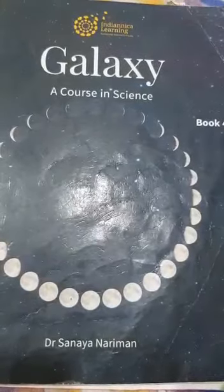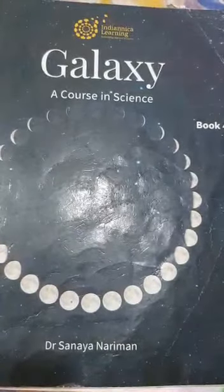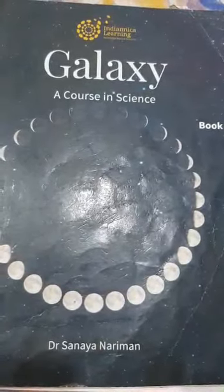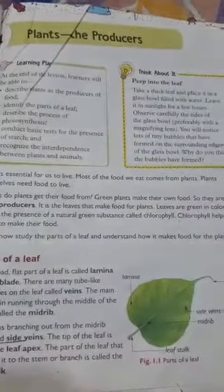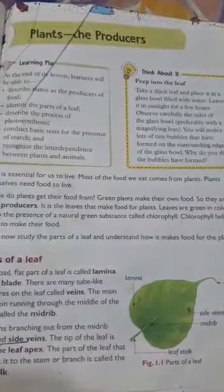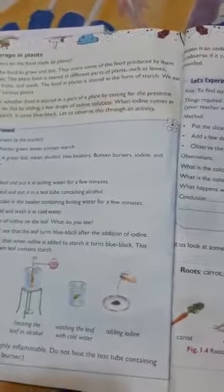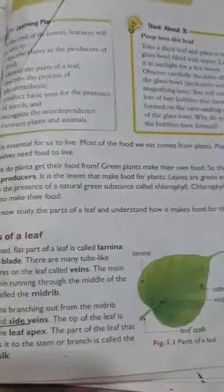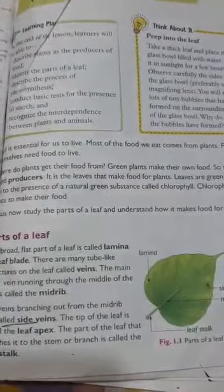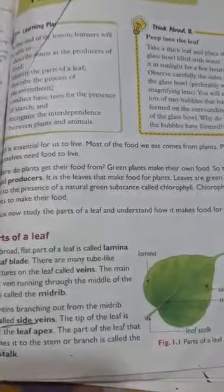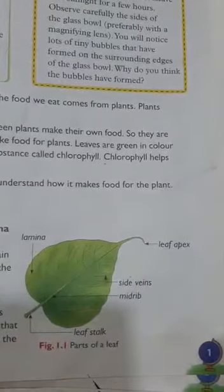Assalamu alaikum children, welcome to the science class for grade four. Today we are going to continue our first lesson, that is plants — the producers. Before starting part two, let's recall whatever we have learned in our earlier class. We have learned the parts of a leaf.